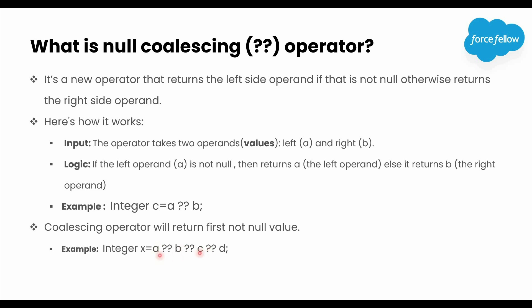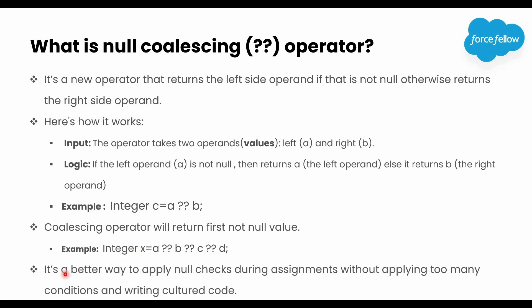It always starts checking operands from the left side. First it checks if A is not null, then directly returns A without checking other variables. But if A is null, it checks B; if B is not null it returns B, else it continues checking other operands. If all operands are null - A, B, and C - then null will be assigned to the variable. The Null coalescing operator is a better way to apply null checks during assignments without applying too many conditions or writing cluttered code.